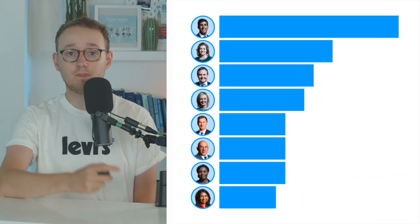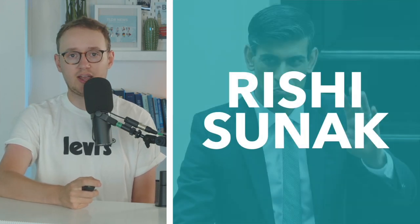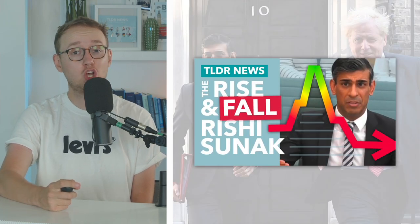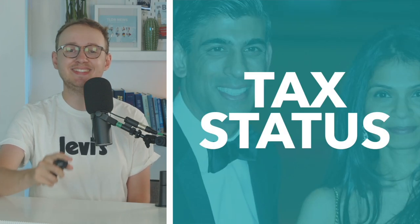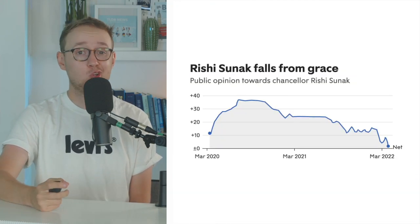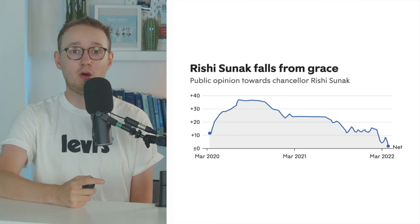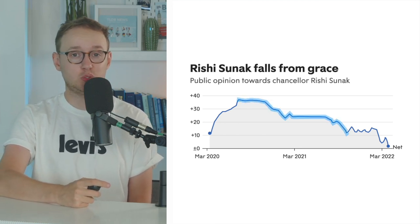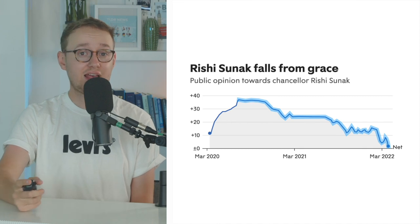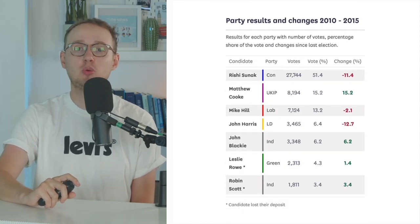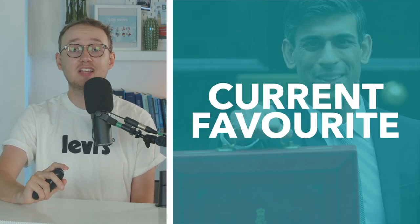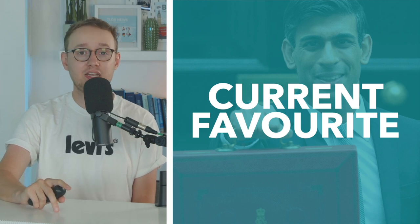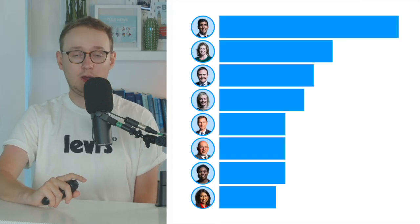Let's start with our front-runner, the former Chancellor, Rishi Sunak. For a while being seen as heir apparent to Johnson, Rishi Sunak has had a turbulent few months — from being fined over Partygate to having his wife's tax affairs publicly scrutinized and challenged. But in spite of this, and in spite of only having been elected in 2015, Sunak is currently the favourite to become leader, both in terms of endorsements and polling.